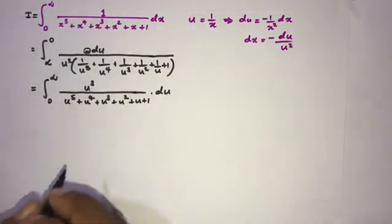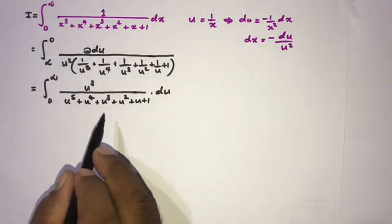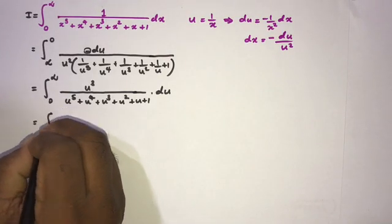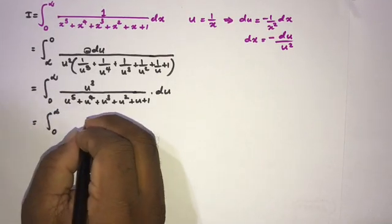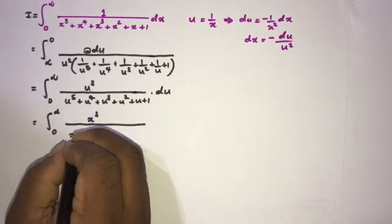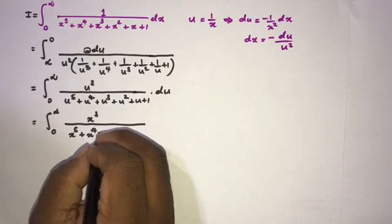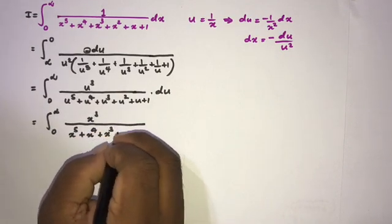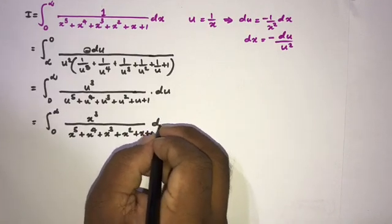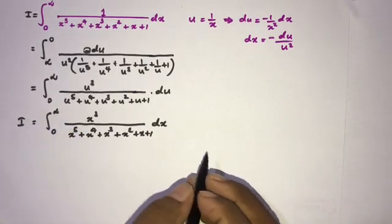Since a definite integral is independent of the variable name, we can substitute x for u. So this transformed integral equals the integral from 0 to infinity of x cubed over x⁵ plus x⁴ plus x³ plus x² plus x plus 1, dx. This is also equal to I.